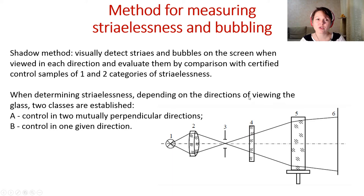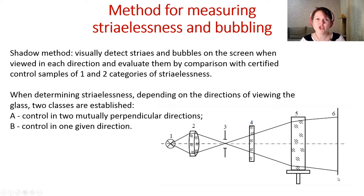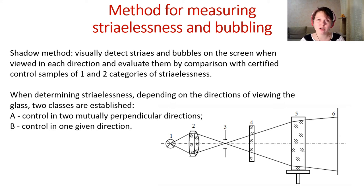The method for measuring strialessness and bubbling is the so-called shadow method. We have a large glass blank and a lamp; we irradiate the glass blank with the lamp and on the screen beside the glass blank we examine the shadows it produces. Using these shadows we can detect the presence or absence of striae, calculate the number of bubbles inside the glass blank, their mean size, and the size of the largest bubbles.